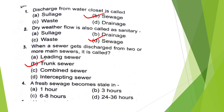A fresh sewage becomes stale in — 1 hour, 3 hours, 6 to 8 hours, or 24 to 36 hours? The answer is option C — 6 to 8 hours.